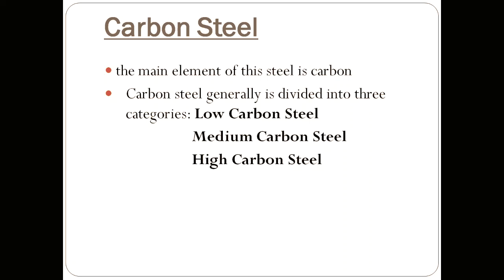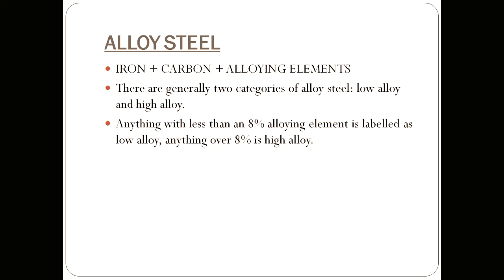Carbon steels are generally divided into three categories: low carbon steel, medium carbon steel, and high carbon steel. We'll be discussing the properties, the percentage of carbon, and the applications of each in another video. So let's move on to alloy steels.